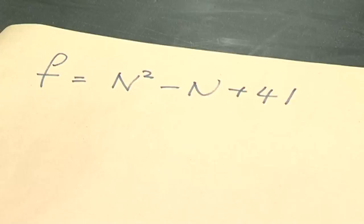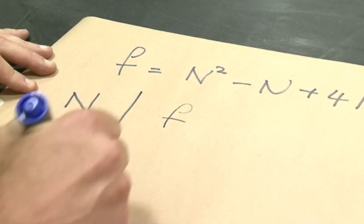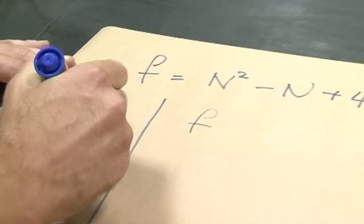what is the value of f? Let's make a table, shall we? So if I put in n equals 0, then I have 0 squared minus 0 plus 41, which is simply 41.